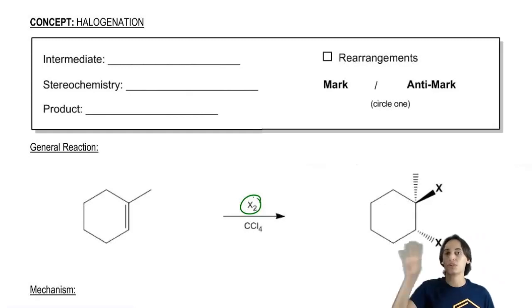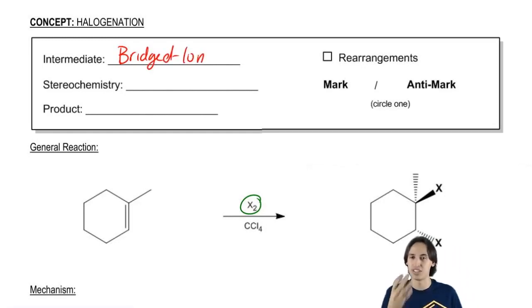Let's go ahead and talk about the general features of this reaction. First of all, the mechanism is going to have an intermediate, and that intermediate is going to be similar to other ones we've learned. It's going to be a bridged ion, so maybe you can already start to visualize what you think that might be.